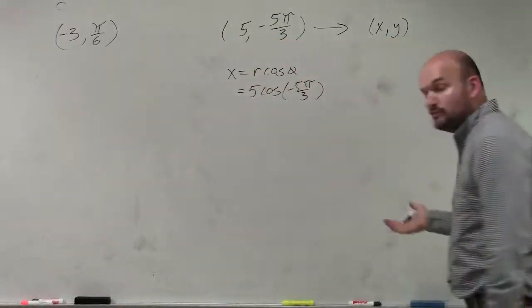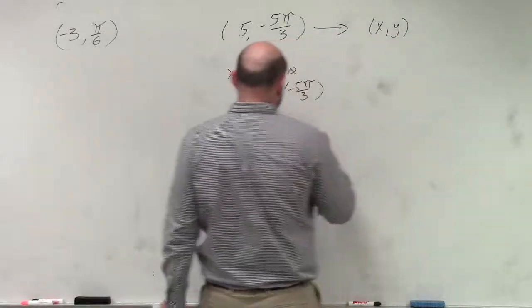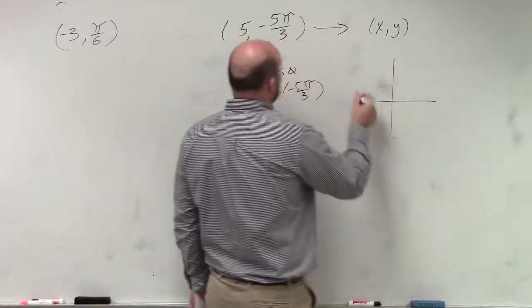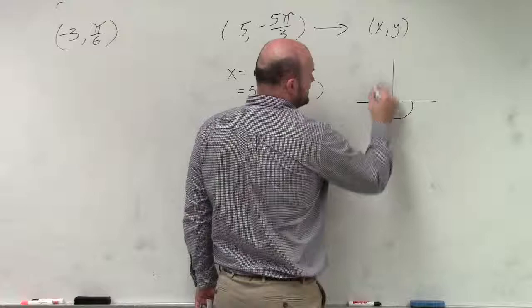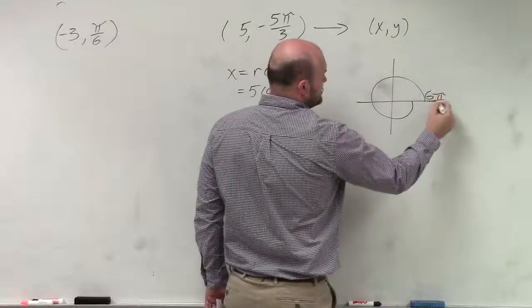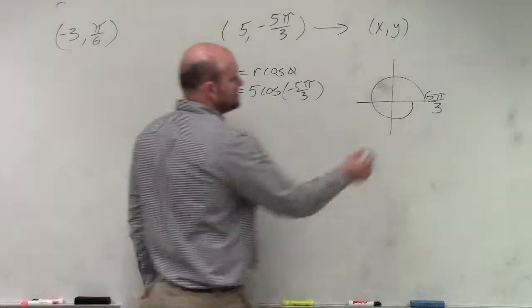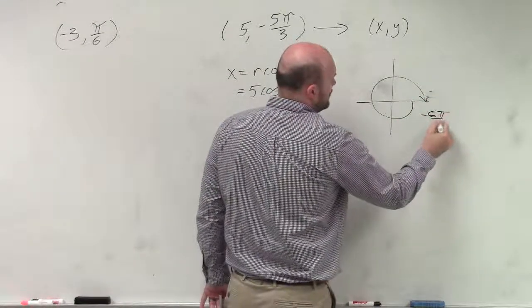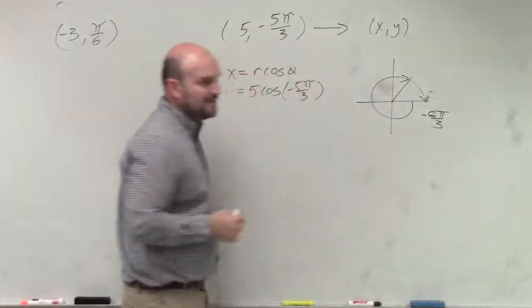Now, if you do not recall what negative 5 pi over 3 is, I would just like to think about this. Because we know that that's negative, think about this as far as being all the way around the circle is 6 pi over 3, right? Same thing as 2 pi. So if you're at negative 6 pi over 3, that from there is going to be negative 5 pi over 3.